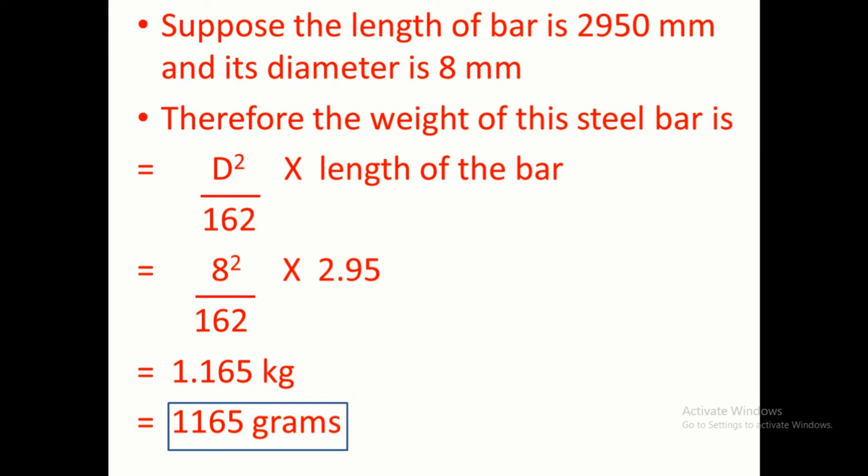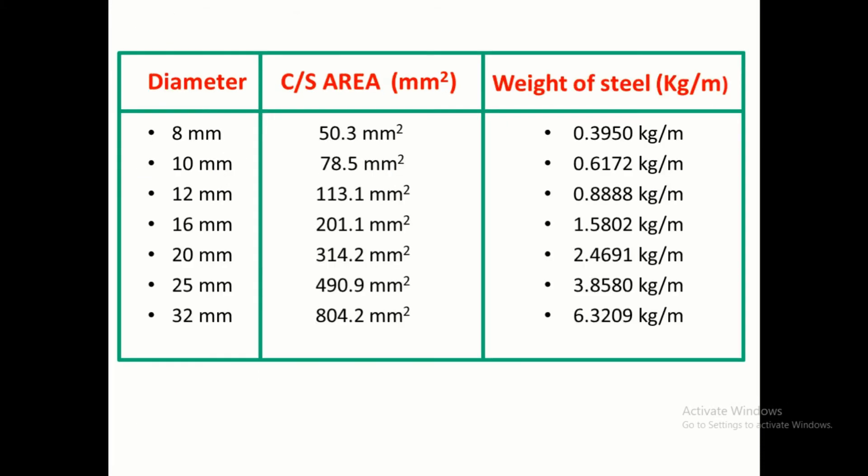Therefore the weight of the steel reinforcing bar of length 2950 mm and diameter 8 mm is 1.165 kg, that is 1165 grams. Here I have prepared a table for diameter, cross sectional area, and weight of the steel. For 8 mm bar, cross sectional area is calculated by π by 4 into D², that is for 8 mm bar it is 50.3 mm². For 10 mm, 78.5.